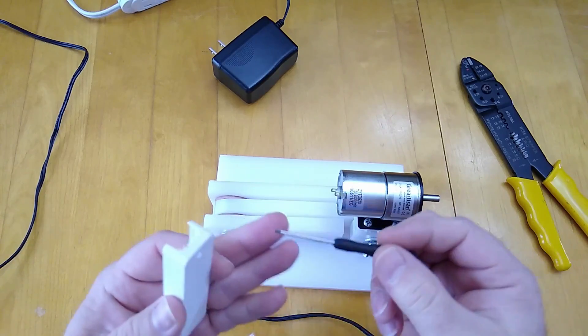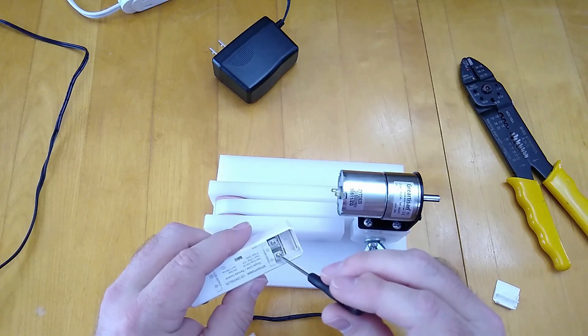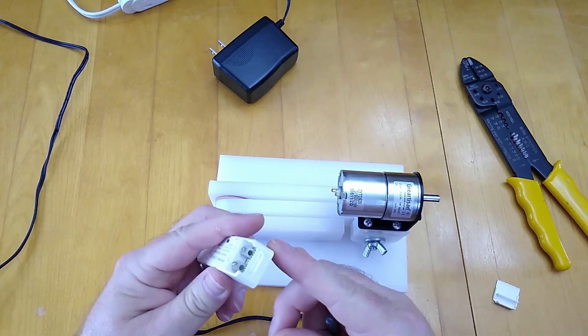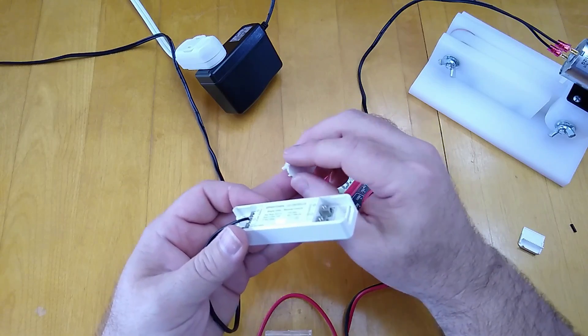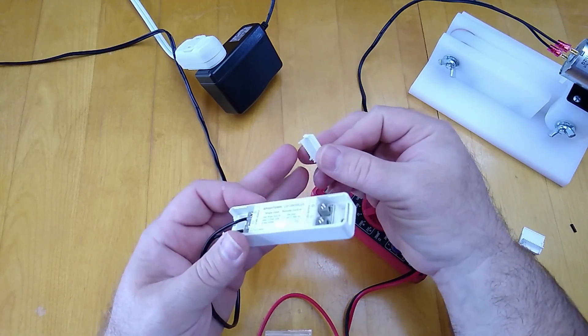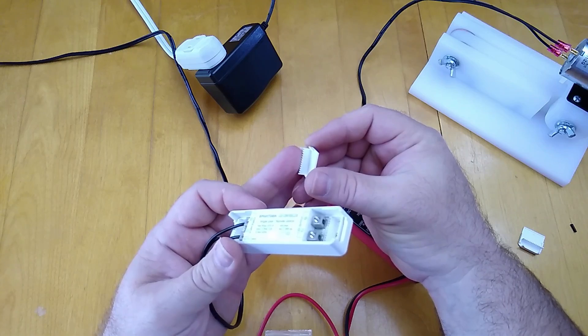When you pop the covers off the ends and see where the terminals are that you hook the wires up to, you'll notice it's a pretty substantial setup for such a small unit. The wire lugs are all metal and they've got some fairly decent sized screws in those lugs.